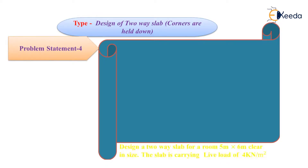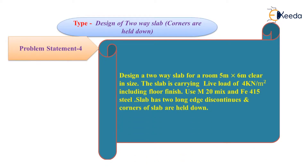Here is the problem statement. Design a two-way slab for a room 5 meter by 6 meter clear in size. The slab is carrying a live load of 4 kN per meter square including floor finish. Use M20 concrete and Fe415 steel. The slab has two long edges discontinuous and corners of the slab are held down.